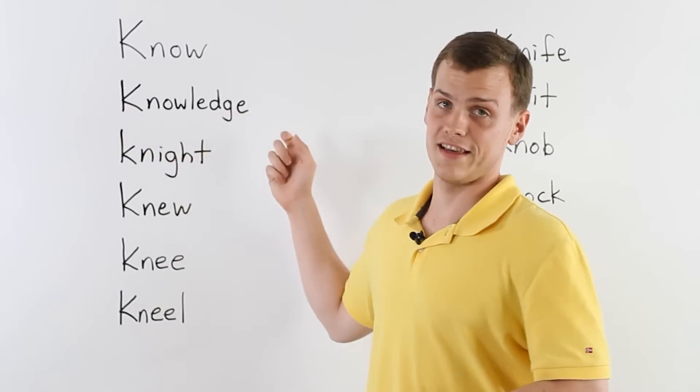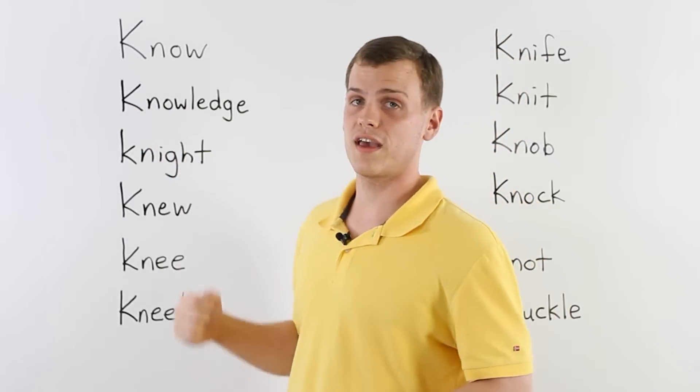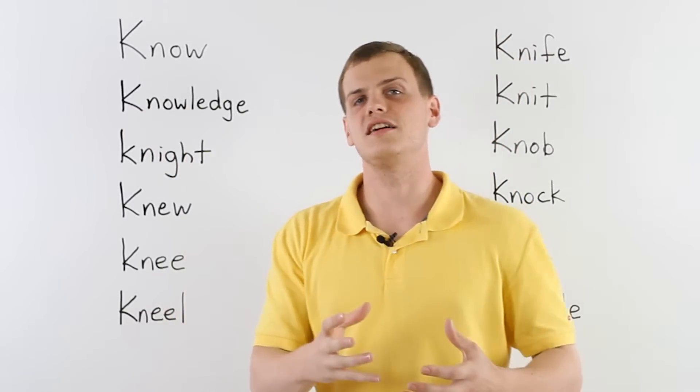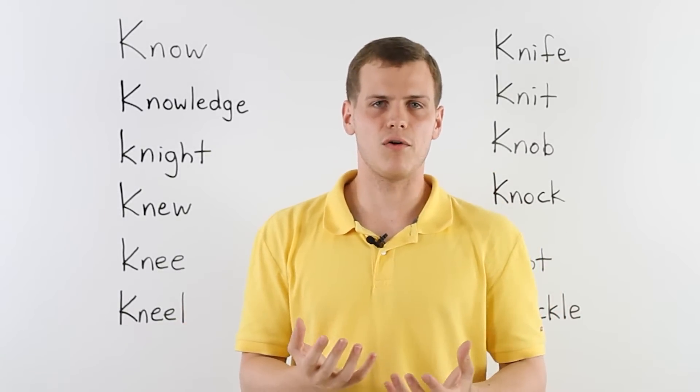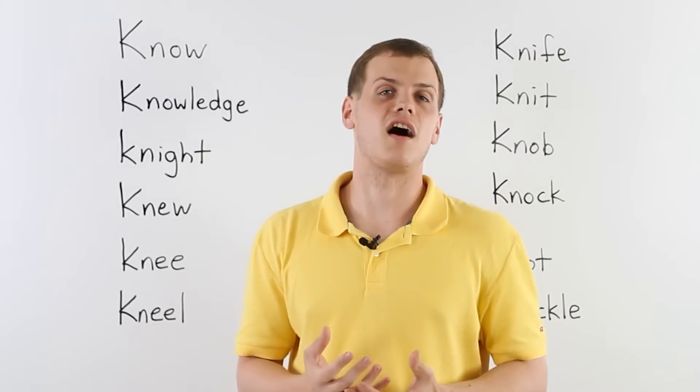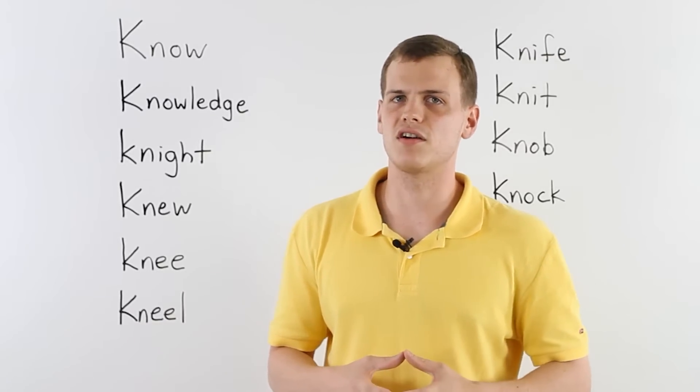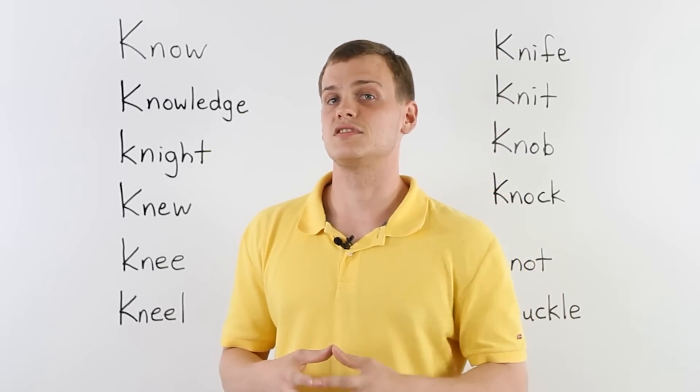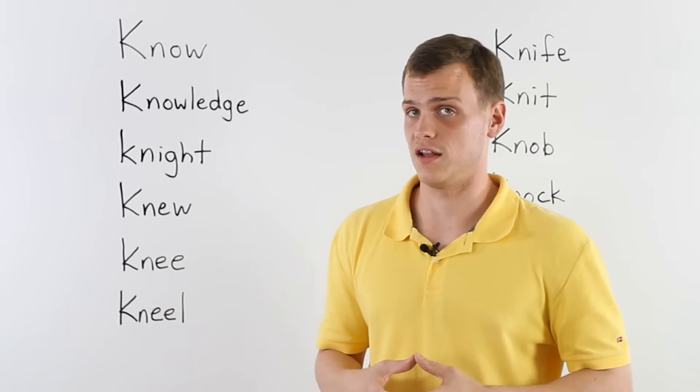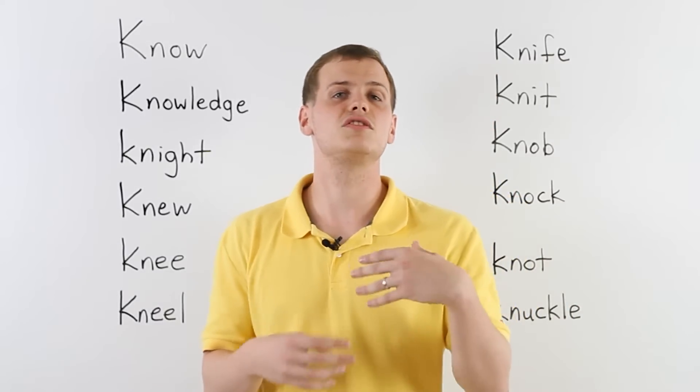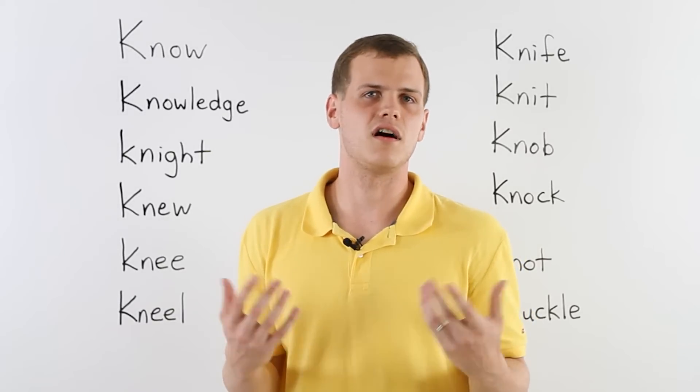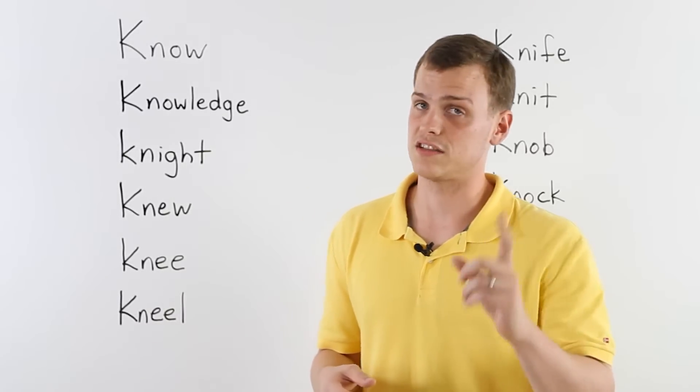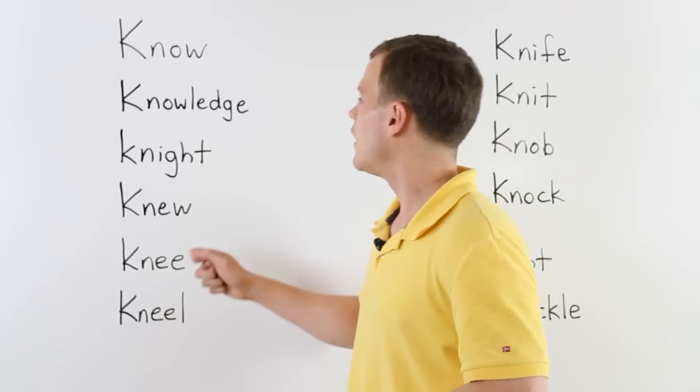And then down to knowledge. Again, no K sound. We have knowledge. Knowledge is all the things you know. If you have a lot of knowledge, you're a very smart person. Stupid people, they have no knowledge. Or maybe you just don't know about a certain topic. It's like, I have no knowledge about the Chinese language. That's a true thing. I don't know anything.